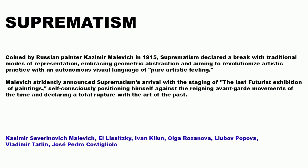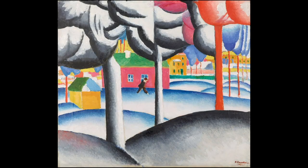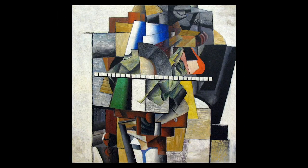Suprematism was coined by Russian painter Kazimir Malevich in 1915. It declared a break with traditional modes of representation, embracing geometric abstraction and aiming to revolutionize artistic practice with an autonomous visual language of pure artistic feeling. Malevich dramatically announced Suprematism's arrival at the last Futurist exhibition of paintings, consciously positioning himself against the reigning avant-garde movements and declaring a total rupture with the art of the past.